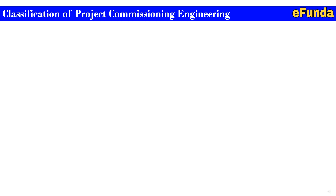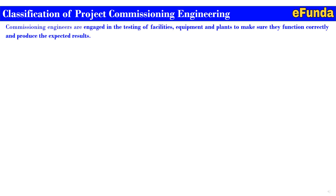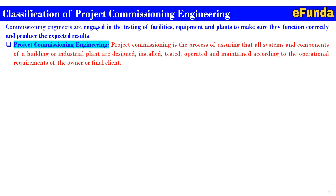Classification of project commissioning engineering: commissioning engineers are engaged in the testing of facilities, equipment, and plants to make sure that they function correctly and produce the expected results. In doing so, they bring the product or system to a point where it can be used more efficiently and effectively. Project commissioning engineering is the process of assuring that all systems and components of a building or industrial plant are designed, installed, tested, operated, and maintained according to the operational requirements of the owner or final client.